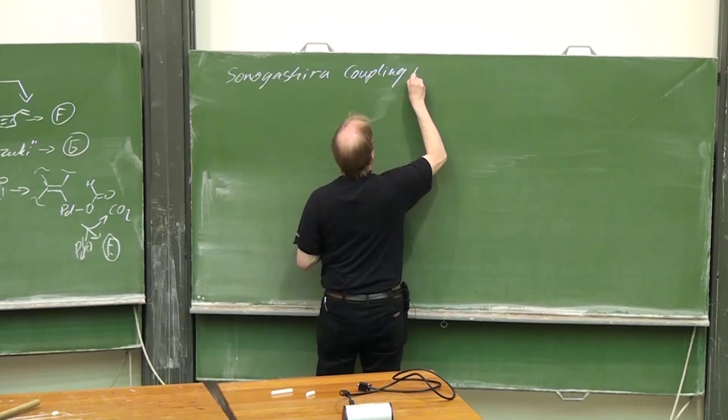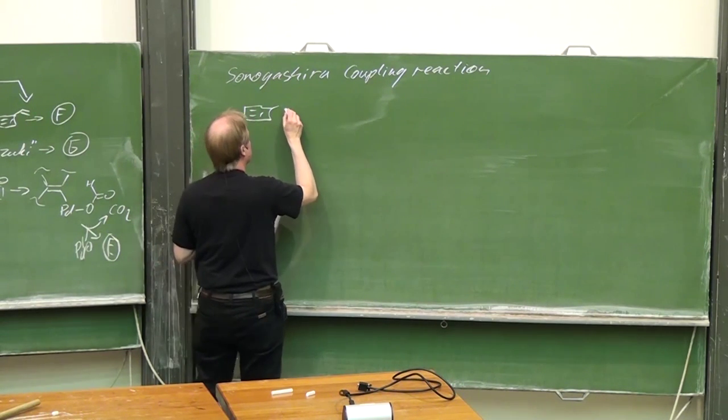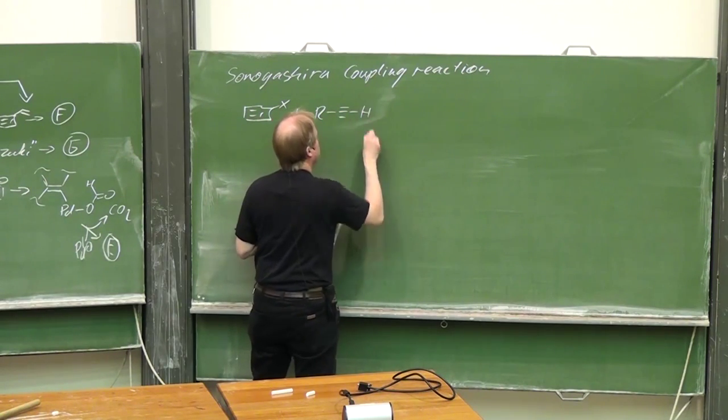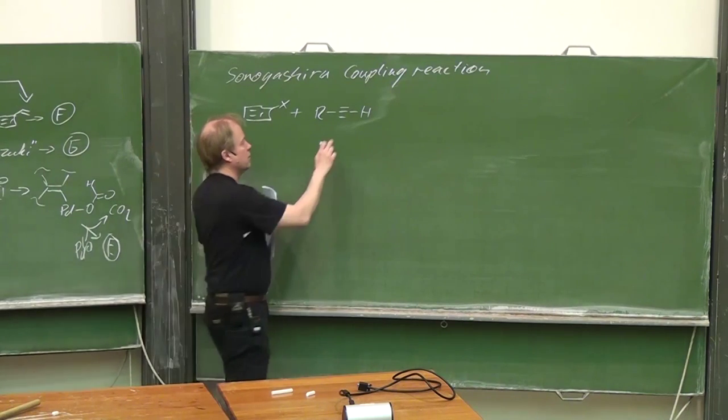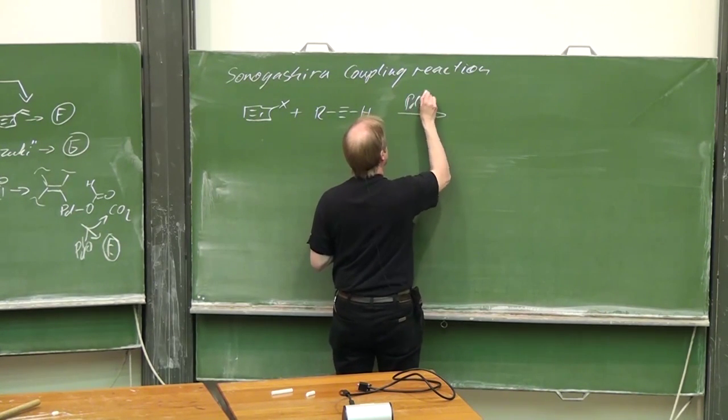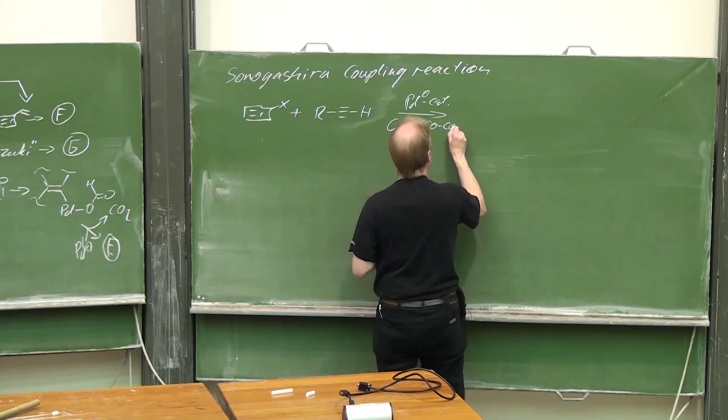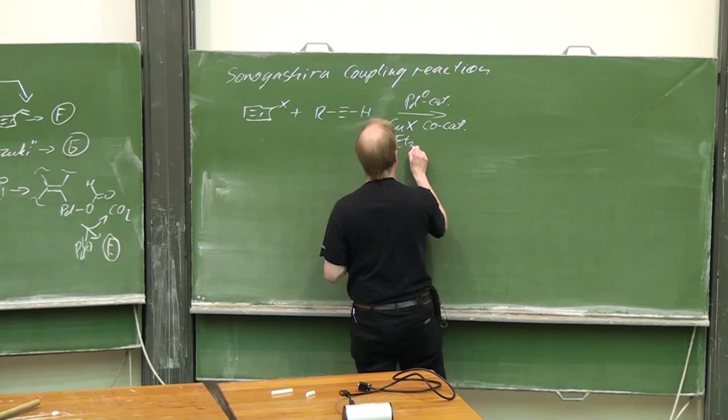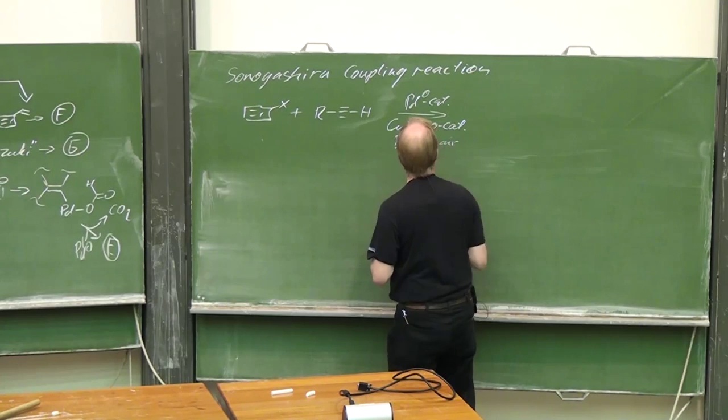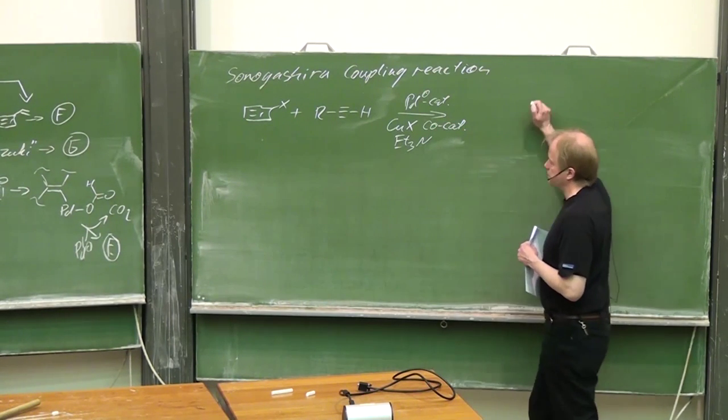For understanding the first reaction, I should briefly explain another palladium-catalyzed process, the Sonogashira coupling reaction. That is, starting with an aryl or vinyl halide, offering a terminal acetylene with the acidic acetylenic CH group. Again, palladium zero catalyst, but you need a copper halide as a co-catalyst and triethylamine.